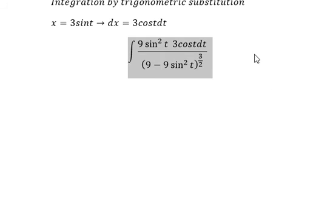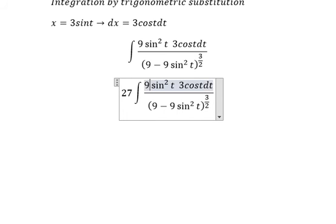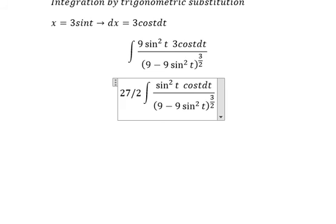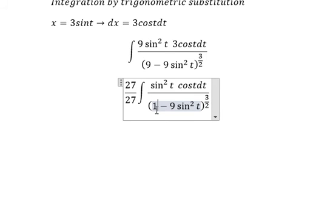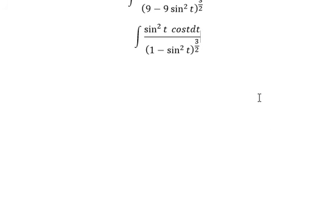Now we need to simplify. 9 multiplied by 3 gives us 27. We put the 3 under the square root — that gives us 3, and then we have 3 to the power of 3, which is 27 in the denominator.